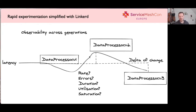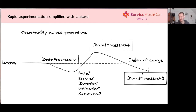And lastly, observing the difference across generations is really paramount to this succeeding. We can do all this stuff, but if we can't observe it in a way that isn't super coarse-grained, then it's pointless. How do we bring rate, errors, duration, utilization, and saturation signals all to the table and say between version one and three there's a massive regression? These are things we need to be able to understand and measure.